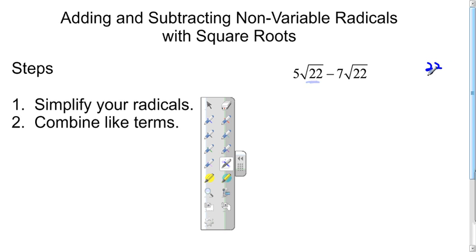It only factors into 2 and 11, which we don't have a repetitive factor, therefore it can't be simplified. So now I'll just look to combine these like terms. We have 5 root 22 minus 7 root 22 will give us negative 2 root 22.